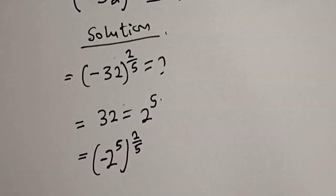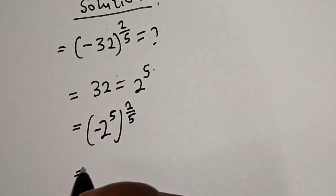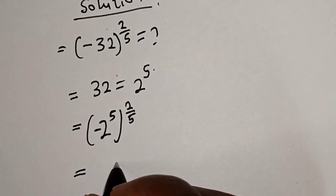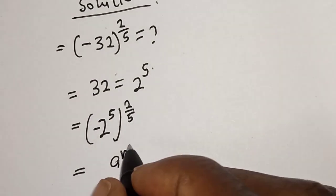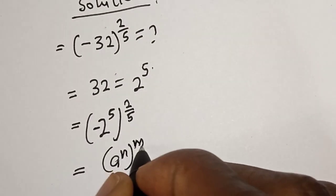Then this is equal to, remember this rule: a to the power n to the power of m is equal to a raised to power m times n.